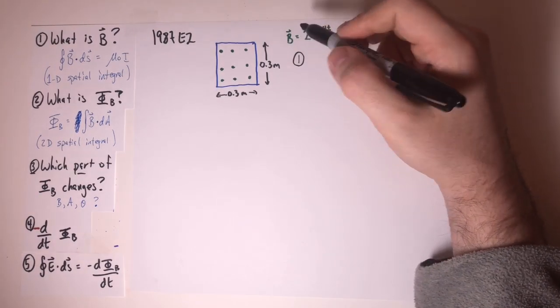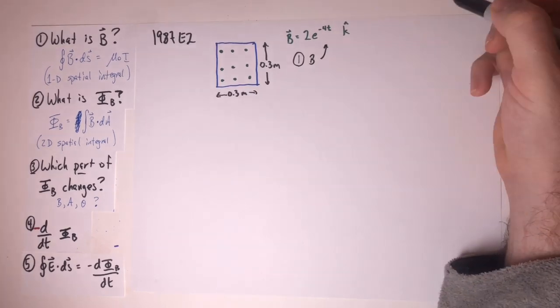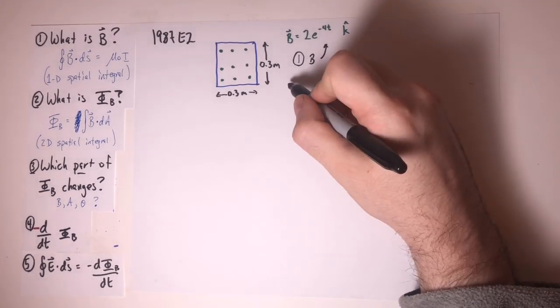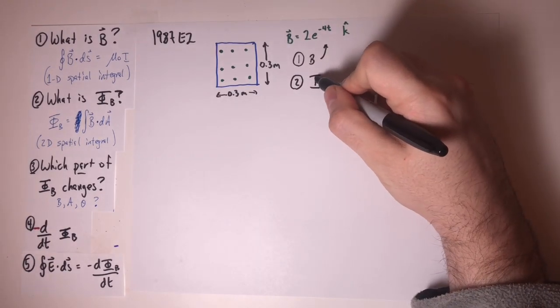The first one is pretty obviously easy. What is B? It's simply that expression up there. We can move right on then to solving for the magnetic flux.